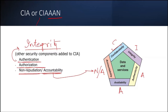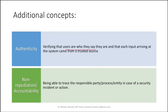Neither the receiver end nor the sender end can deny the responsibility or accountability for whatever transaction has been done by them. The transaction can be any kind of transaction — sending messages, downloading something — everything is a transaction on the internet. Authenticity is basically verifying the users are who they say they are, and that each input arriving at the system comes from a trusted source.